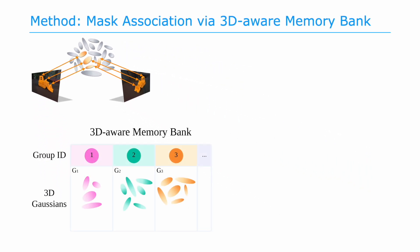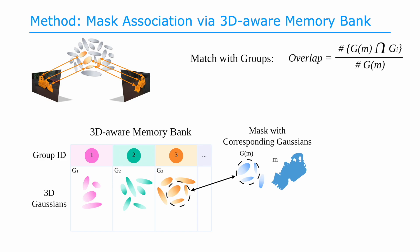We introduce a 3D-aware memory bank to collect and categorize 3D Gaussians into groups and use them to associate masks across different views. When encountering a new mask, we first identify its corresponding Gaussians, then check if the current mask has significant overlap with any groups in the memory bank. If a group has the highest overlap above a threshold, we assign that group ID to the current mask and update the memory bank with non-overlapped Gaussians; otherwise, we declare a new group.